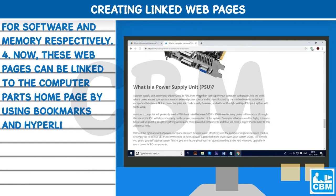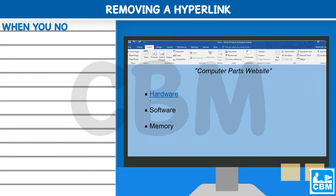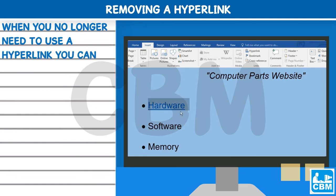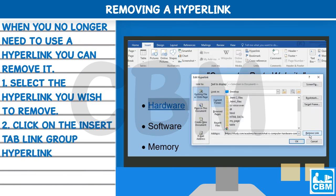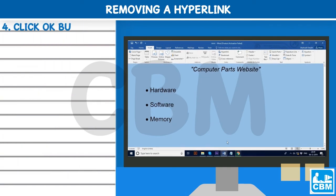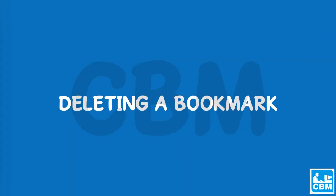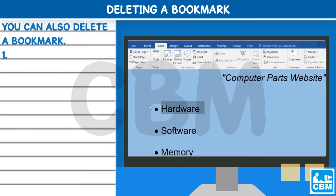Removing a Hyperlink: When you no longer need to use a hyperlink, you can remove it. 1) Select the hyperlink you wish to remove. 2) Click on the Insert tab, Link group, Hyperlink. 3) Choose Remove Link. 4) Click OK.